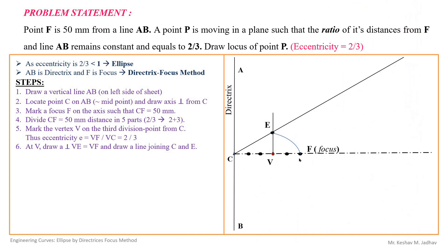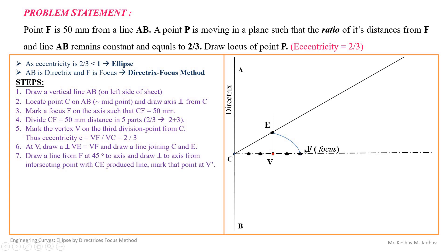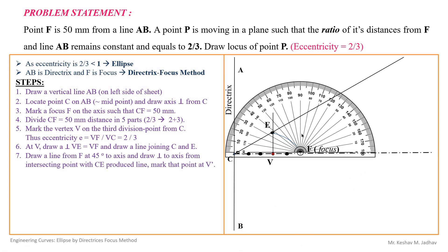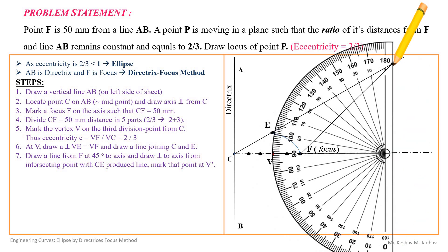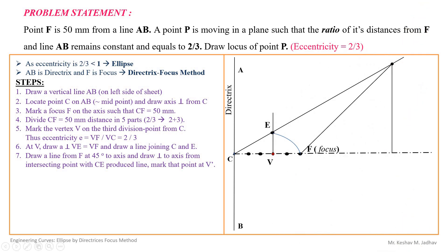From point F, draw a line at 45 degrees inclination to the axis. Using a protractor, measure 45 degrees and draw the line. From the point of intersection with the vertical from V extended, draw a vertical line perpendicular to the axis. This gives point V', which is the second vertex. The ellipse will pass through both vertices V and V'.